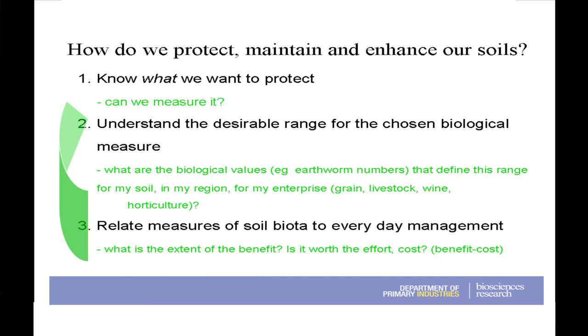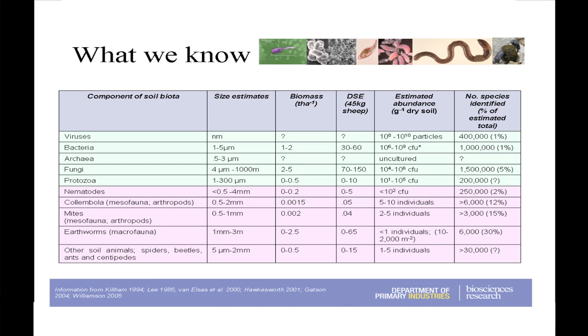We also need to relate those measures to how we manage — these are challenges we need to address. In terms of relating that measurement of soil biota, we need to think about what the extent of the benefit will be if we manage the soil biota better, and whether it's worth the effort cost-wise. There's a lot we know about soil biology and soil functions, but there's also a lot we don't know. Where we're at currently is that the smaller the organism, the less we know about it, because the smaller the organism, the more diverse they are and the more difficult it is to identify them.